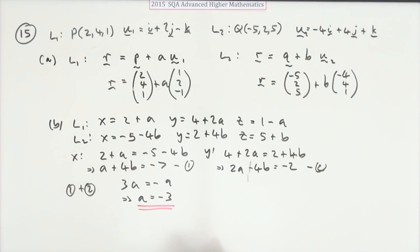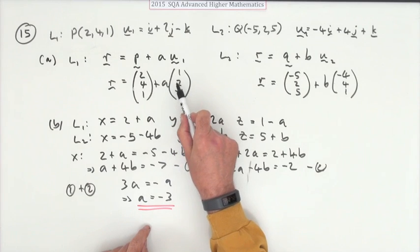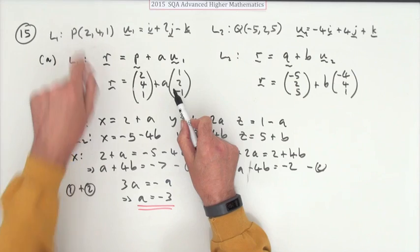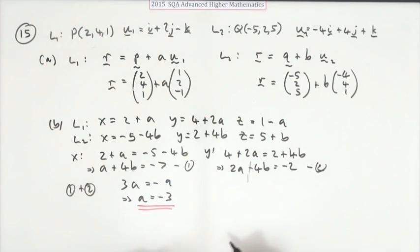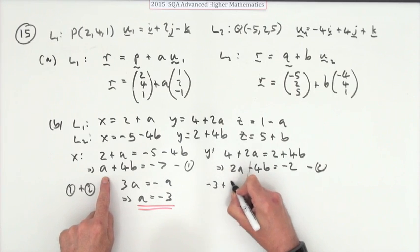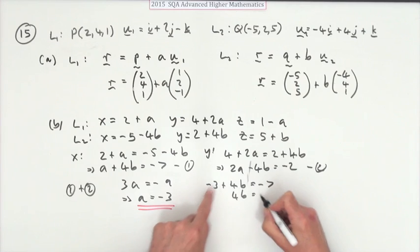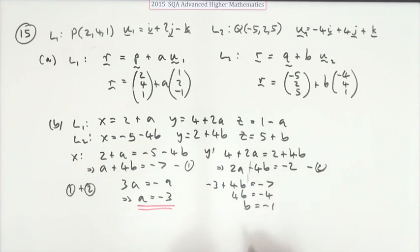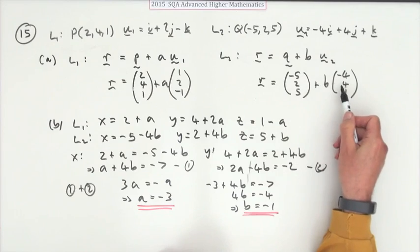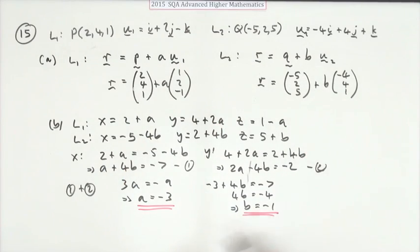So what that says is, this point of intersection should be three steps of this vector back along this line from this point. How about this one now? Once we know what a is, how can we find what b is? Well, substitute it back into whichever one. I'll just go back to this one, I think. That says negative 3 plus 4b equals negative 7. So, 4b will equal adding 3 negative 4. So, b equals negative 1. Both parameters turn out to be negative, which means that that's one step of that vector back from this point along that line. Or is it?